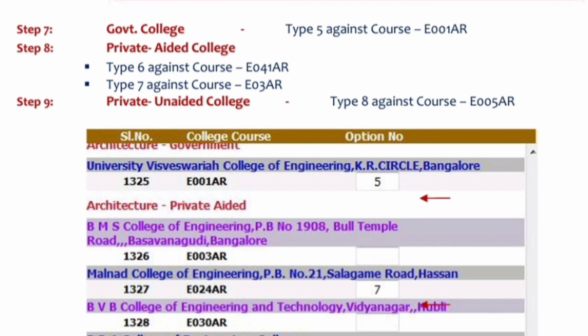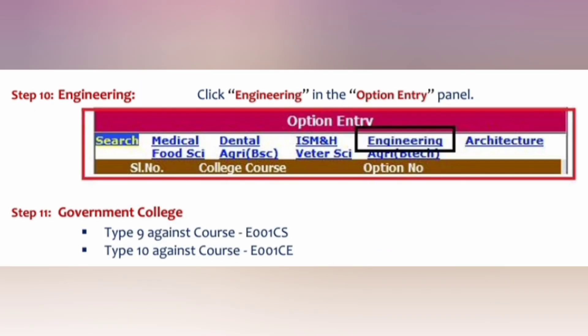When you click on architecture on the top, UVCE architecture course is displayed. Put 5 in front of that. Then go to PDA College of Engineering — put 6 in front of that. Then go to Malnard College of Engineering, architecture course AR, code 025 AR — put 7. Last option was RVCE architecture — put 8 in front of RVCE architecture. That way you have created a mix of colleges from engineering and architecture.